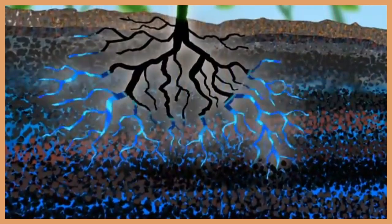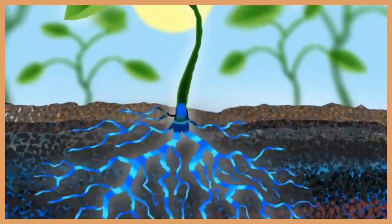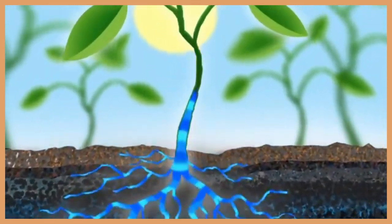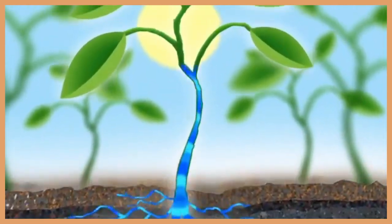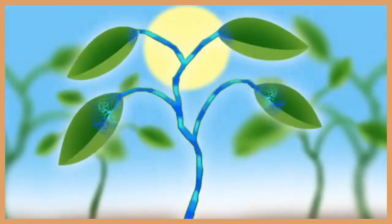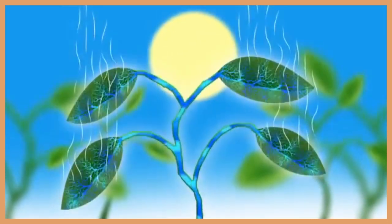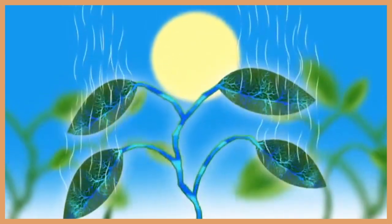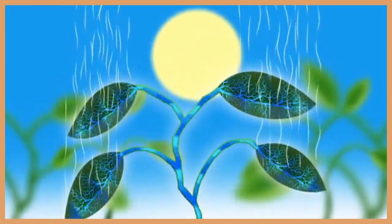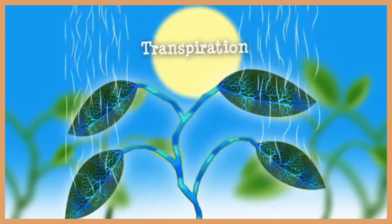Groundwater can also be absorbed by the roots of plants. Water travels up through the plant to its leaves where it evaporates and turns into water vapor, in a process known as transpiration.